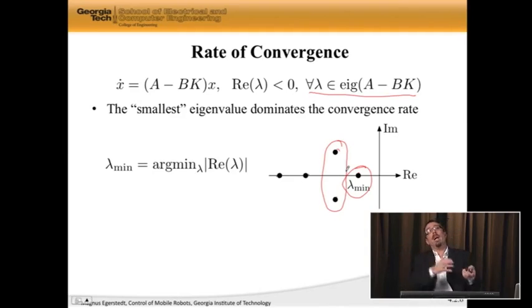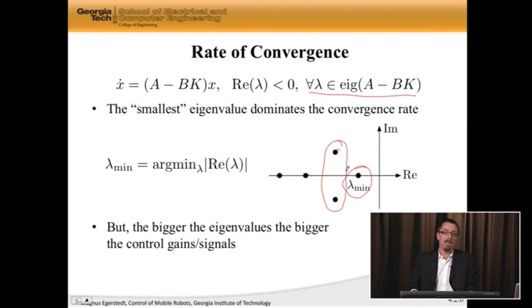This eigenvalue dominates the performance in terms of how quickly the thing converges. If you make all your eigenvalues equal to minus a million, you have a really, really fast system.